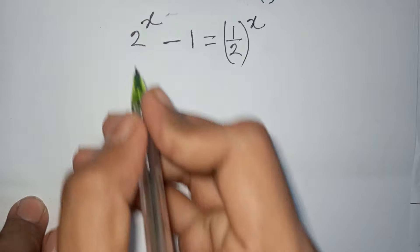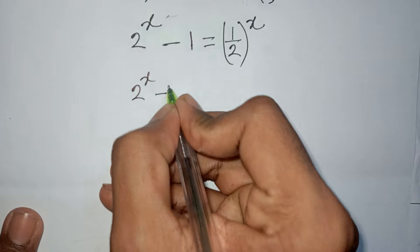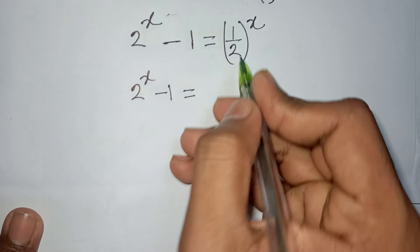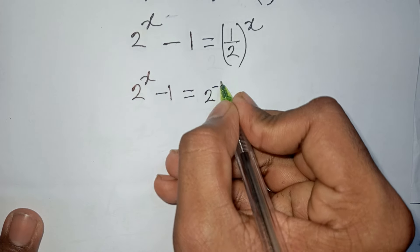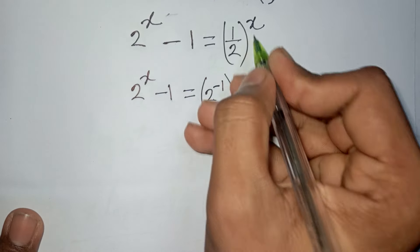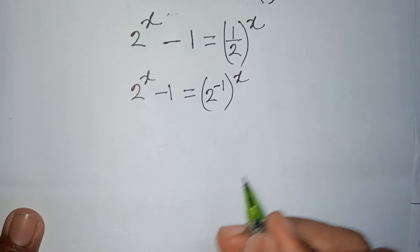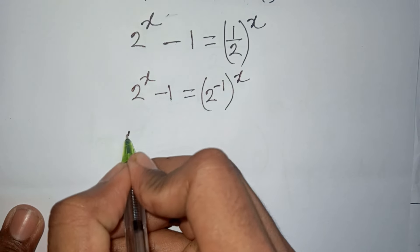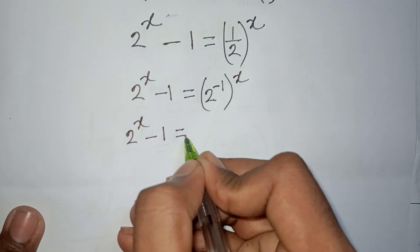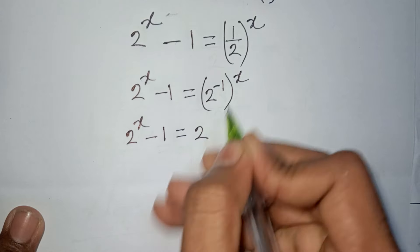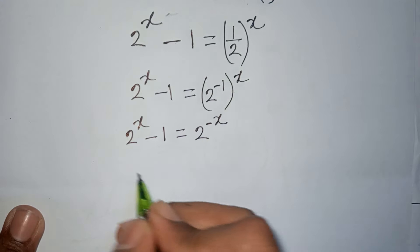So we have 2^x minus 1 equals (1/2)^x. Since 1/2 is the same as 2^(-1), we can write the right side as (2^(-1))^x, which equals 2^(-x).